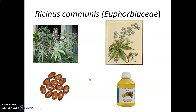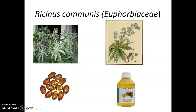Castor oil is actually obtained from the plant Ricinus communis, which belongs to the family Euphorbiaceae. Here you can see the image of this plant. This is the fruit, and basically this fruit consists of the seed. This is the kernel of the seed, and after expression this seed can generate pure castor oil, which is useful as a pharmaceutical agent.